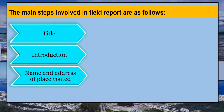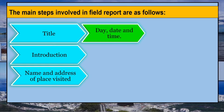Third, Name and Address of Place Visited: mention the details of the geographical location, why you chose it, and the physiography of that area. You can also mention physical and cultural details. A copy of the map or satellite image can be given here. Fourth, mention the day, date, and time of the visit. Fifth, Observation: by observation we mean what type of method you used in collecting information. It could be investigation, measurement, data collected from primary and secondary sources, photographs, etc.